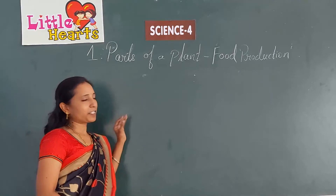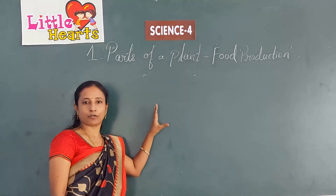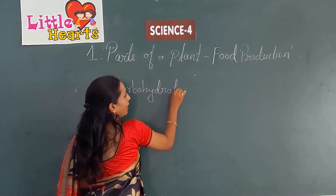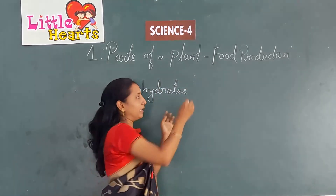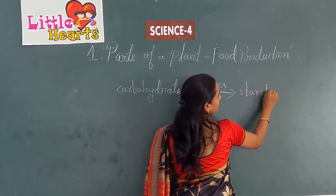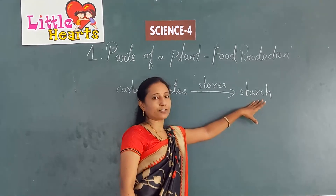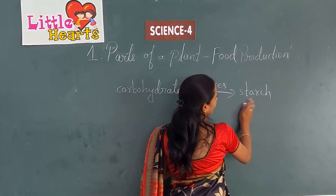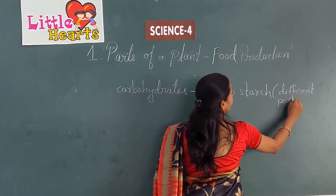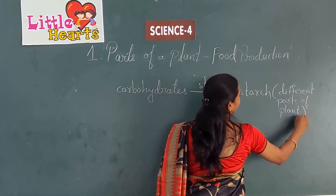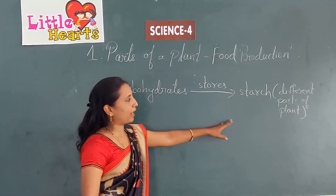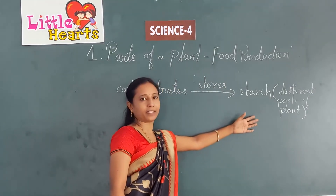Plants prepare food called carbohydrates, which is glucose. When carbohydrates are formed in excess quantity, they are stored in the form of starch. This starch is stored in different parts of the plant — such as leaves, stems, flowers, and fruits — which we also take as vegetables.